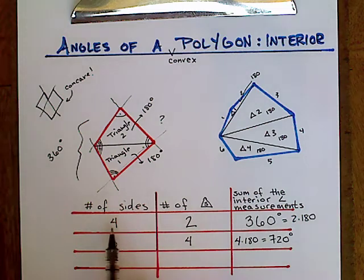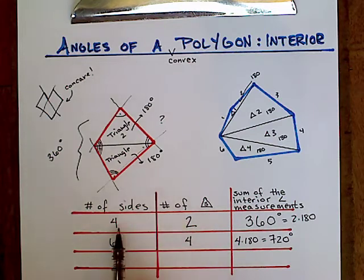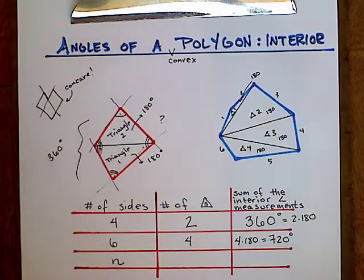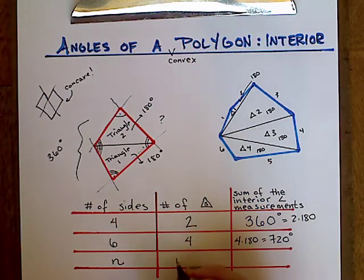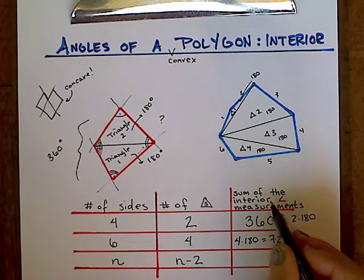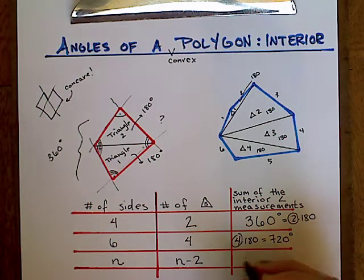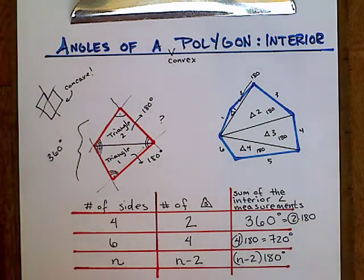Now let's look at the relationship between the number of sides and the number of triangles. With four sides, we cut it into two triangles. With six sides, we cut it into four triangles — always two triangles fewer than the number of sides. So I can create an equation: if n is the number of sides, then (n minus 2) times 180 gives the sum of the interior angles of any convex polygon.